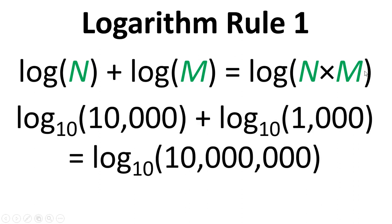So let's look at an example. Log to the base 10 of 10,000 plus log to the base 10 of 1,000 will equal log to the base 10 of 10 million. So log to the base 10 of 10,000 is 4, log to the base 10 of 1,000 is 3, and log to the base 10 of 10,000,000 is 7. So that works out.